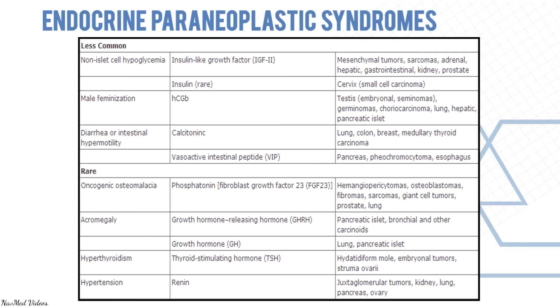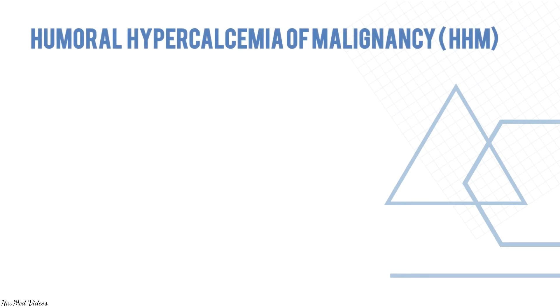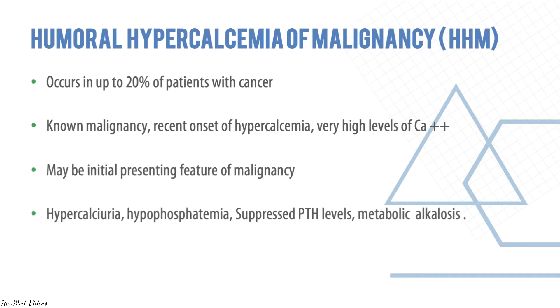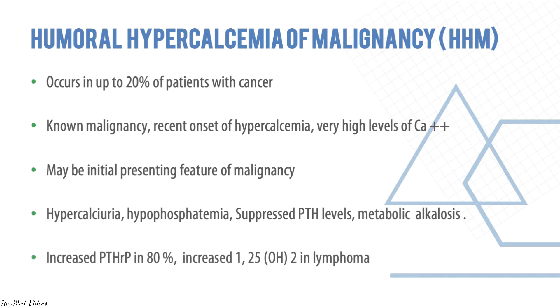Less common endocrine paraneoplastic syndromes include non-islet cell hypoglycemia, male feminization, acromegaly, hyperthyroidism, and hypertension. Humoral hypercalcemia of malignancy occurs in about 20% of cancer patients. There is recent-onset hypercalcemia with very high calcium levels, and it may be the initial presenting feature. It presents with hypercalciuria, hypophosphatemia, suppressed PTH levels, and alkalosis.